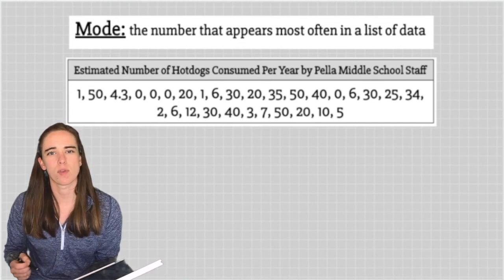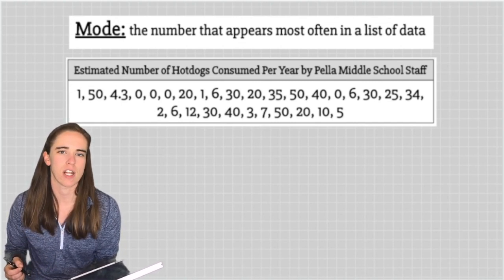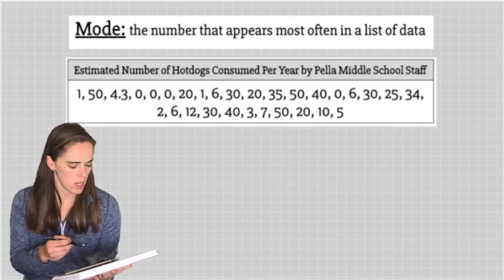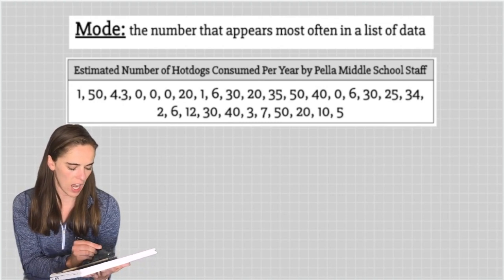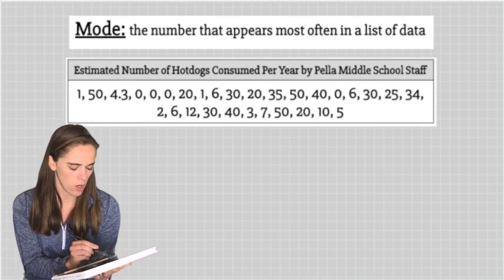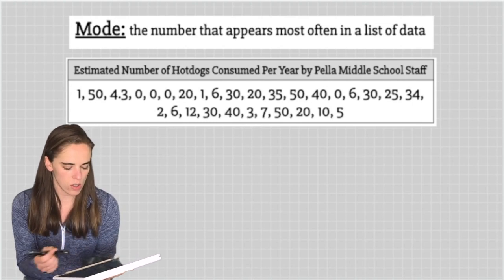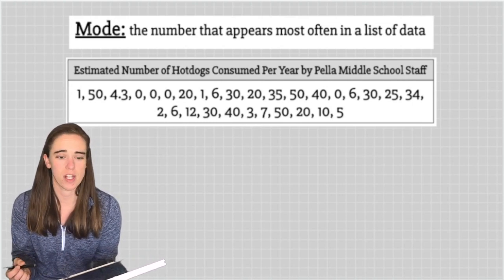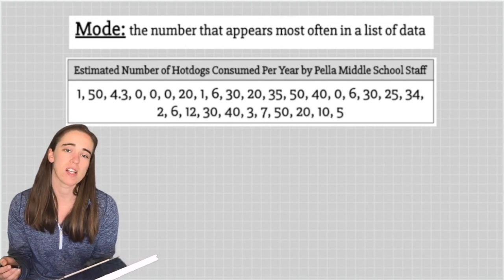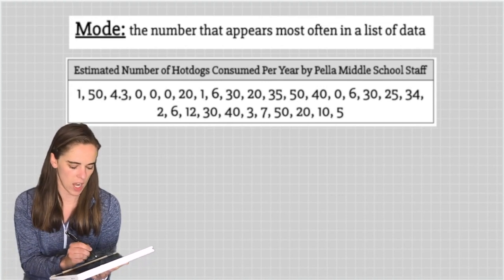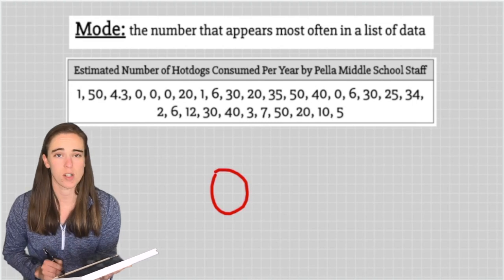The mode is the number that simply appears the most often in your set of data. You need to go through and see how many times each number appears. For this one, I have zero written four times. There are also other sets of data that are repeated as well, like multiple 30s and multiple 20s, but because zero is repeated the most, the mode is zero.